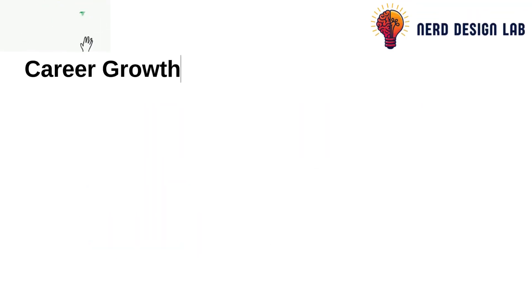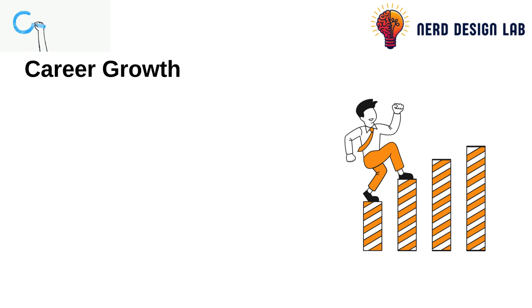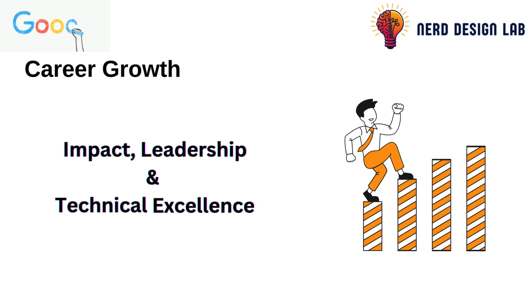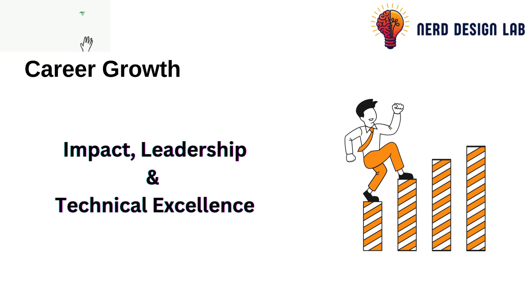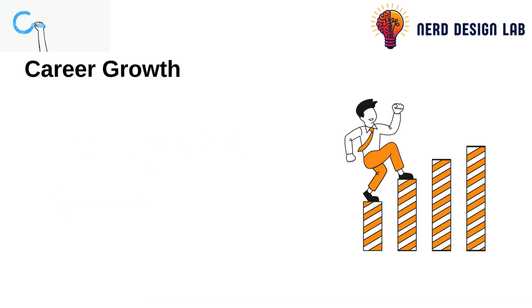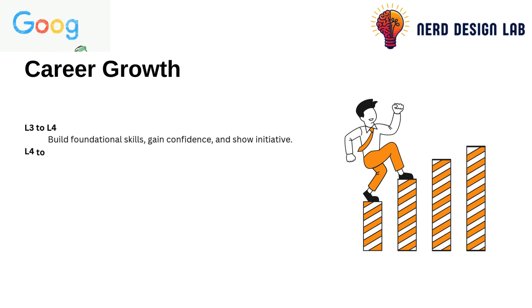Now you're probably wondering, how do you grow from one level to the next? At Google, it's all about demonstrating impact, leadership, and technical excellence at the next level before you're promoted. Here's a quick summary of what's expected at each step. L3 to L4: build foundational skills, gain confidence, and show initiative.